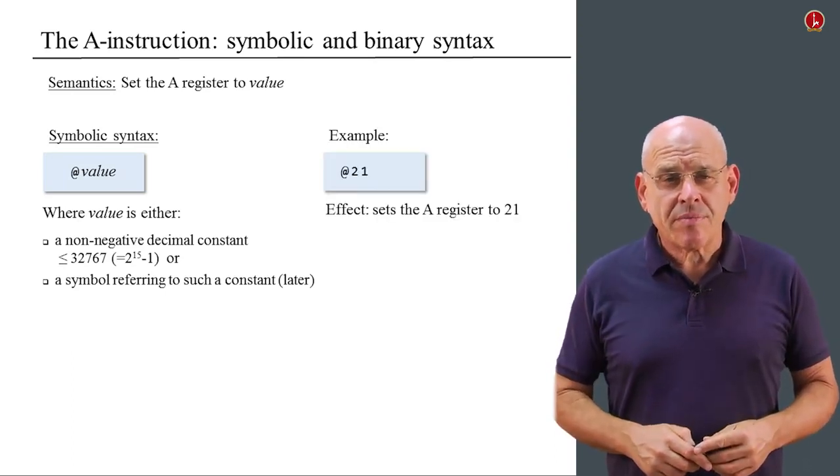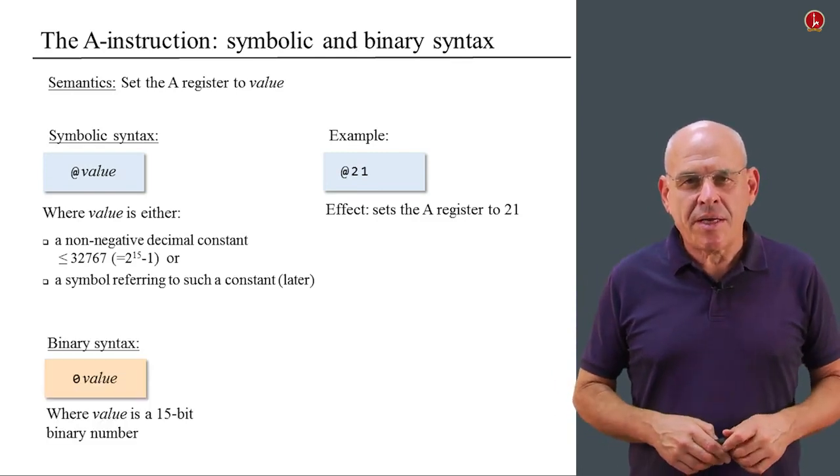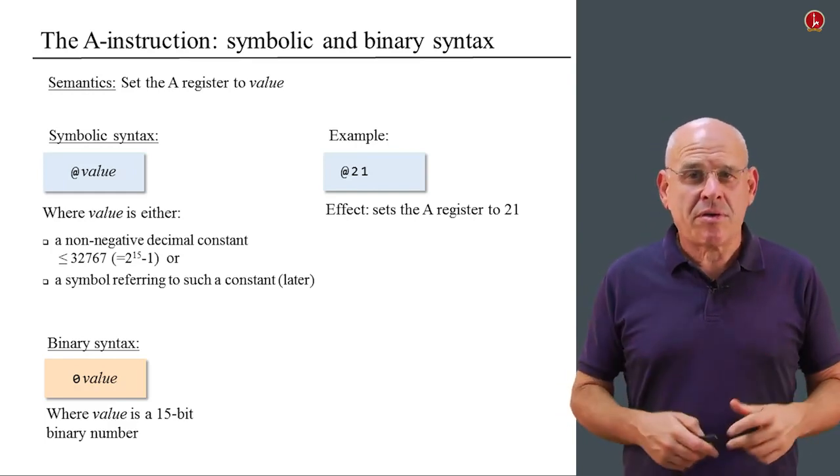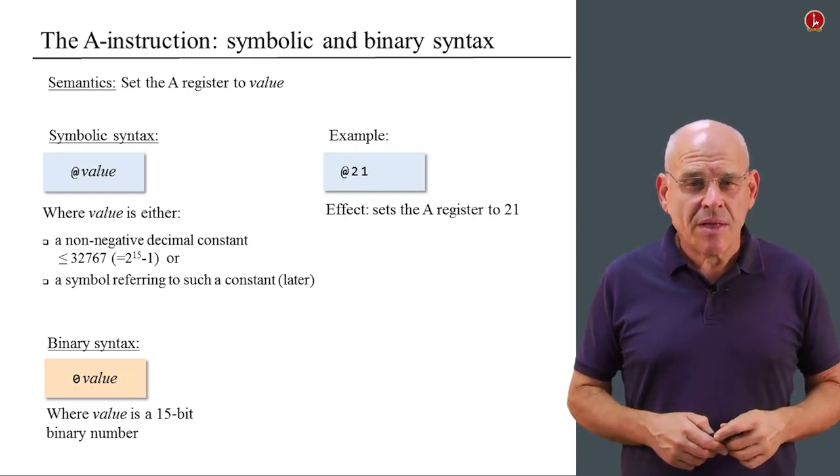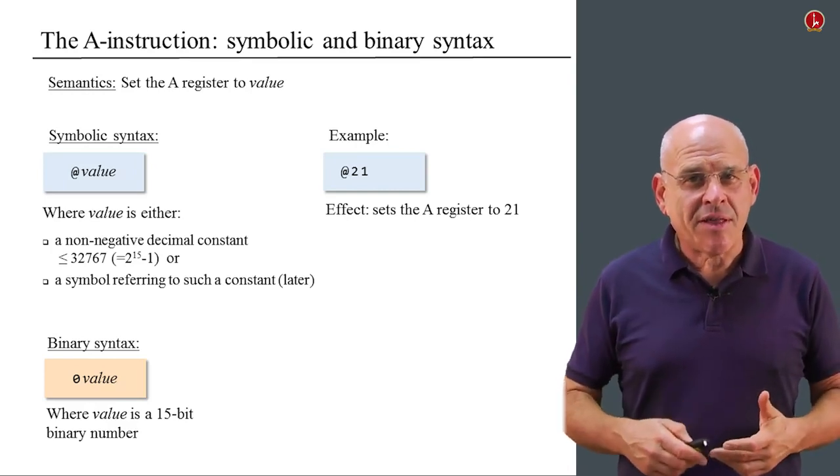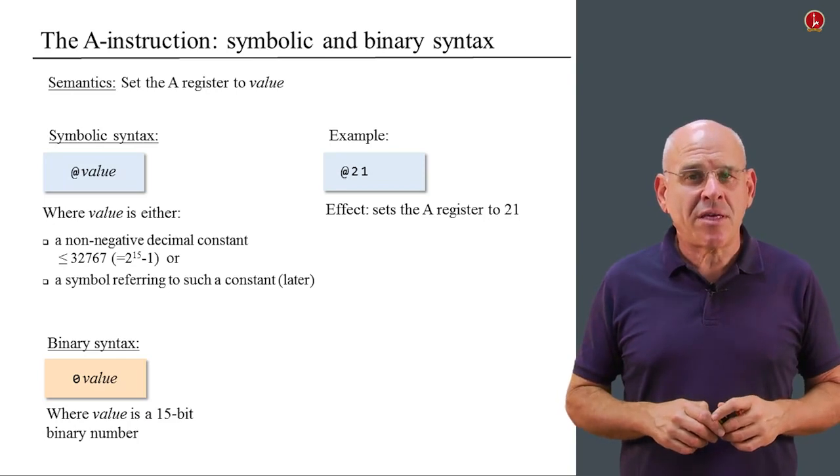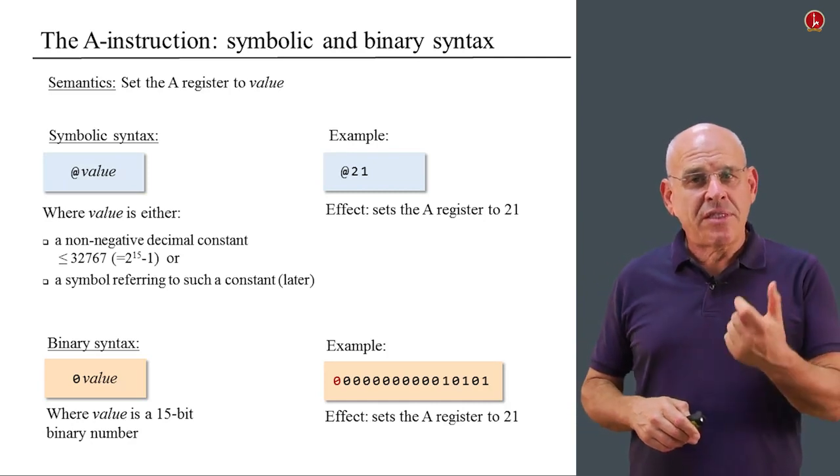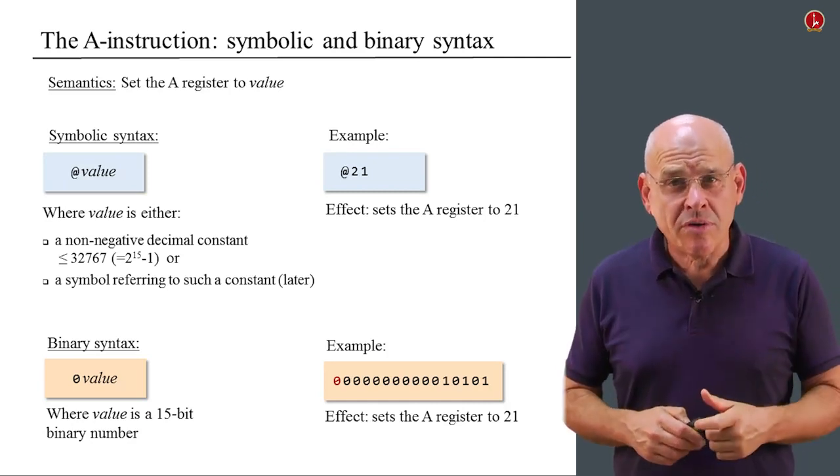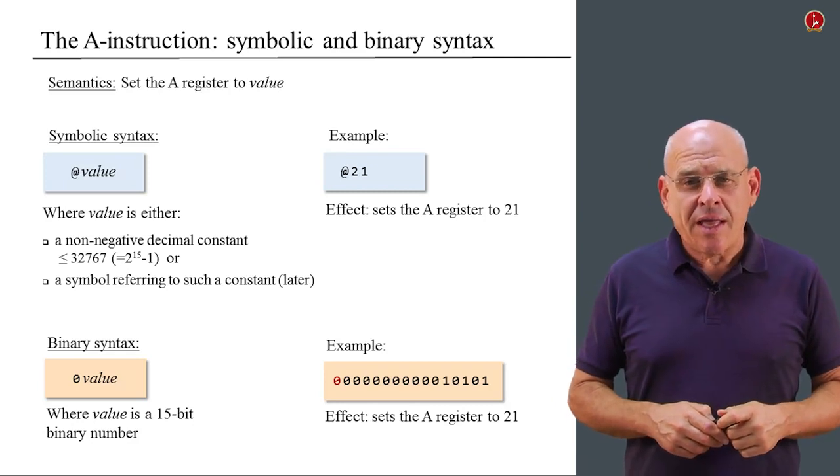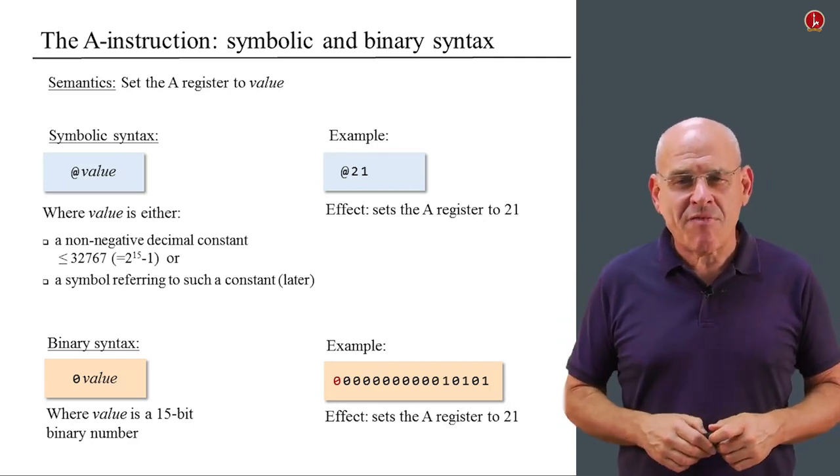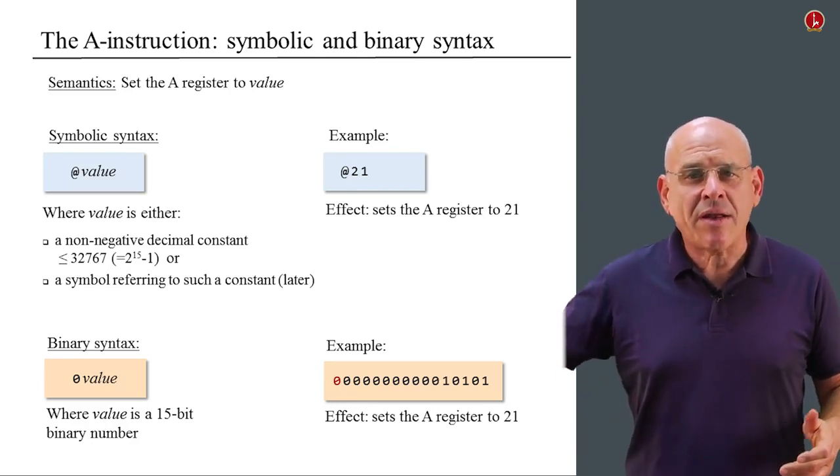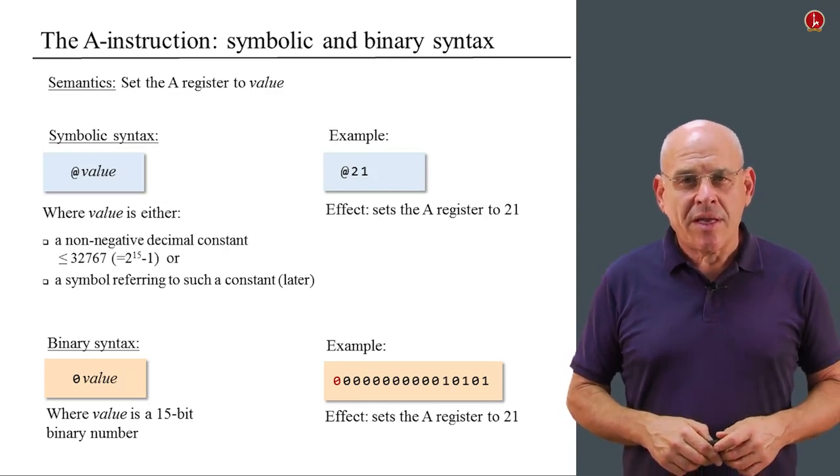For example, at 21. So here's the same instruction in its binary flavor. We begin with a special code 0, which tells the computer that this is an A instruction. And then we specify the same value that we had in the symbolic instruction, but we specify it using binary code. So altogether, we get something like this example here. Once again, the first 0 is something called an opcode, an operation code. And then come 15 bits that represent the value that we want to load into the A register. And it so happens that hopefully 10101 is the same as 21 in binary.